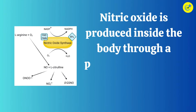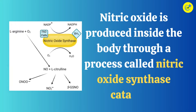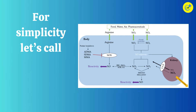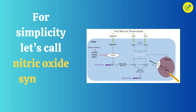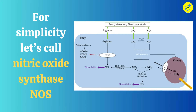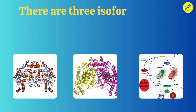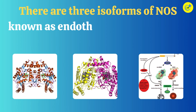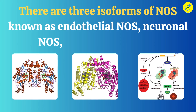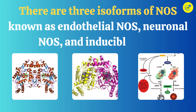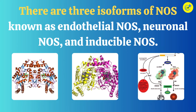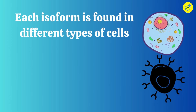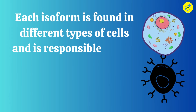How is nitric oxide produced inside the body? Nitric oxide is produced inside the body through a process called nitric oxide synthase catalysis. For simplicity, let's call nitric oxide synthase NOS. There are three isoforms of NOS known as endothelial NOS, neuronal NOS, and inducible NOS.